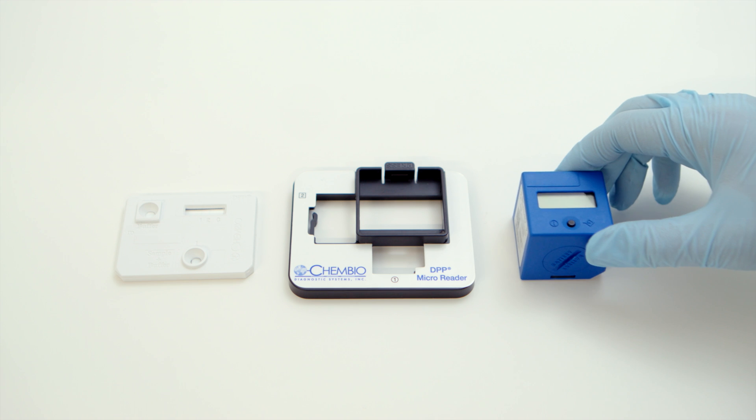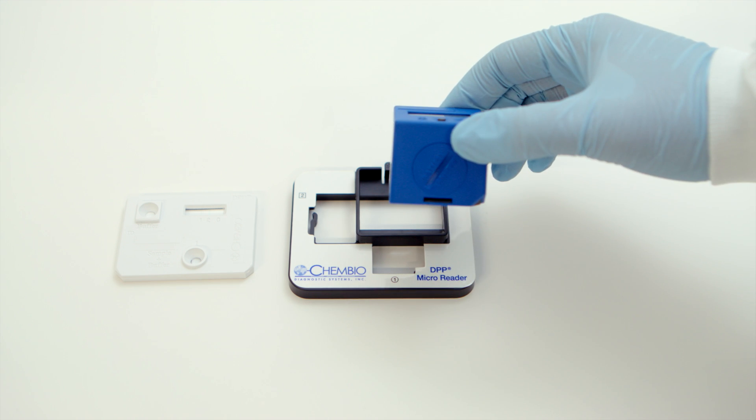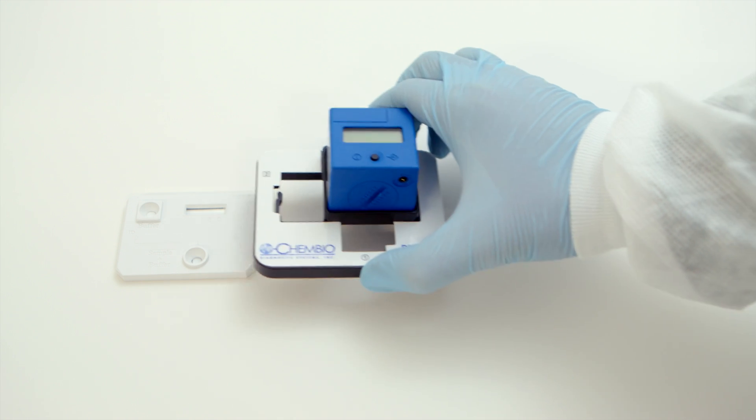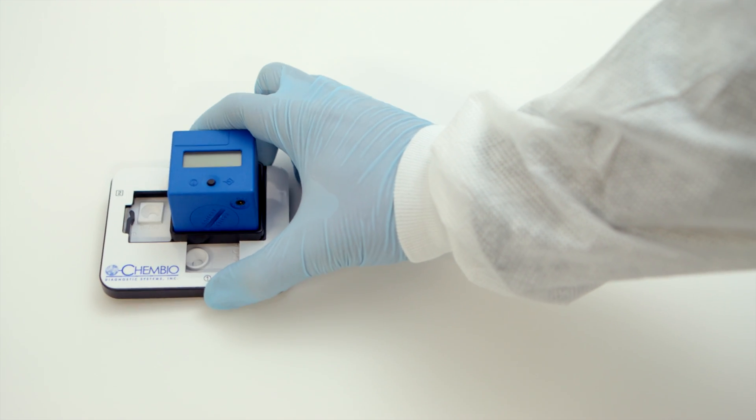Place the DPP microreader onto the test device holder, ensuring the slanted edge of the reader meets the corresponding slanted corner of the test device holder socket. The microreader is secure in the holder once a clicking sound is heard. Now place the test device holder onto the test device.